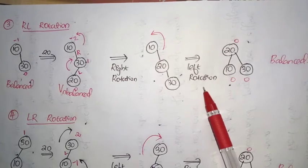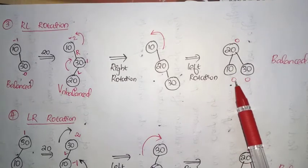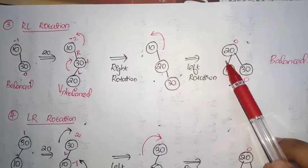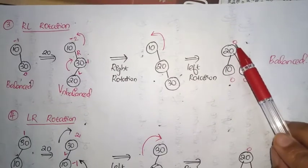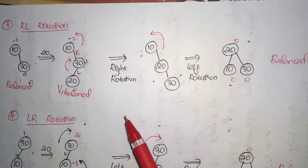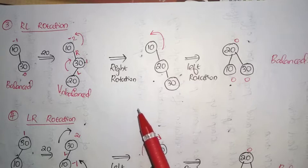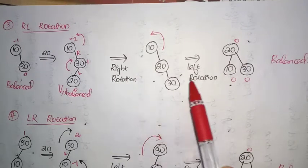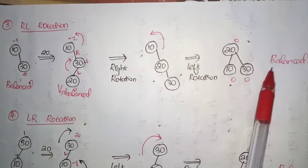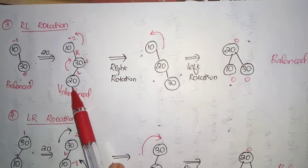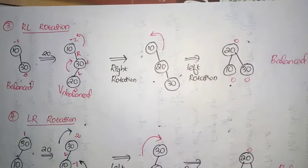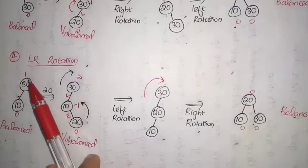After this left rotation, the balancing factor of each node is recalculated. These are leaf nodes so their balancing factor is 0. The balancing factor of the root node is height of left subtree 1 minus height of right subtree 1, which is 0. The tree is now balanced. In an RL rotation we perform two rotations: a right rotation first (clockwise), then a left rotation (anti-clockwise). Such rotation is carried out when insertion occurs in the left side of the right child.